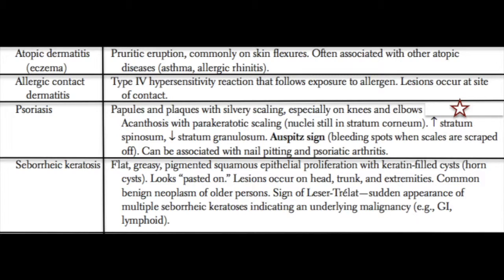Next we have psoriasis, an autoimmune condition that causes papules and plaques with a very characteristic silvery scaling — whenever you see the term 'silvery scaling' on Step 1, think psoriasis. Histologically, you get nuclei still present in the stratum corneum, where nucleated cells are not supposed to be. You also see acanthosis.